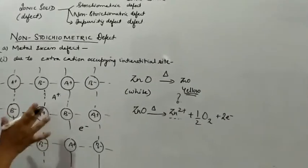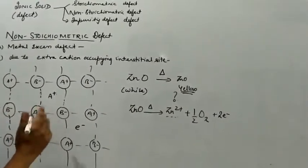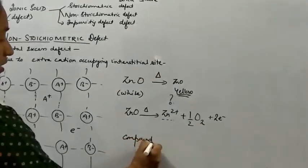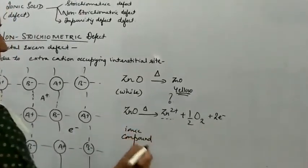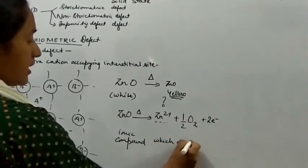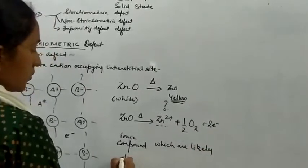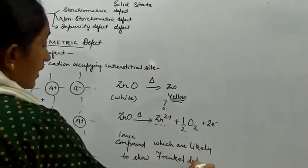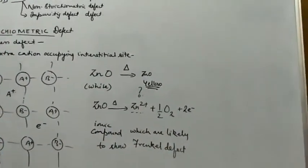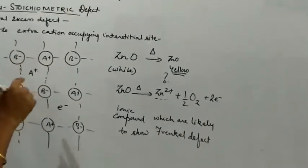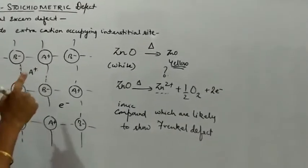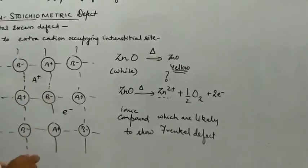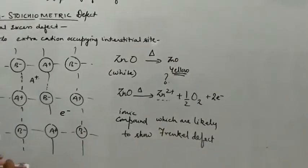This type of defect is shown by ionic solids which exhibit the Frenkel defect. In the case of ionic vacancy, where a hole is created in the lattice site and electrons become entrapped, those ionic compounds likely to show the Schottky defect are involved. Here, it is those compounds likely to show the Frenkel defect.